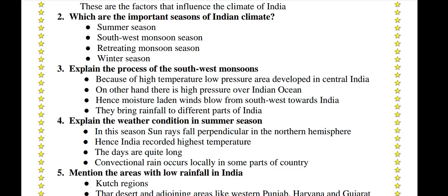Explain the weather conditions in summer season. In this season, sun rays fall perpendicular in the northern hemisphere. Hence, India records high temperature. The days are quite long. Convectional rain occurs locally in some parts of the country.